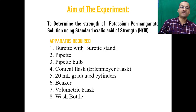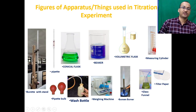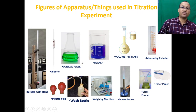The apparatus required for this experiment are: burette with burette stand, pipette, pipette bulb, conical flask, graduated cylinder, beaker, volumetric flask, wash bottle, weighing machine, Bunsen burner, glass funnel, and filter paper. Most of these apparatus are usually used in titration experiments.